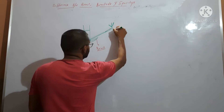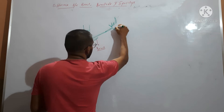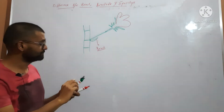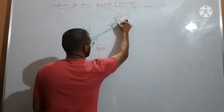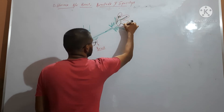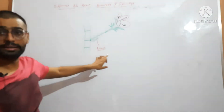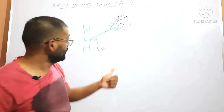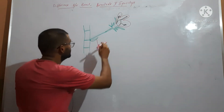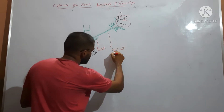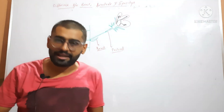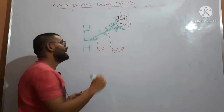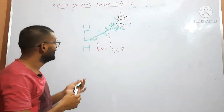On the floral branch, you will find a flower. Suppose this is a flower — I am drawing all the parts of the flower. Bract is a leaf-like structure that is present at the base of the floral branch. This floral branch is called the pedicel. Any reduced leaf-like structure that is present on this pedicel is called a bracteole.